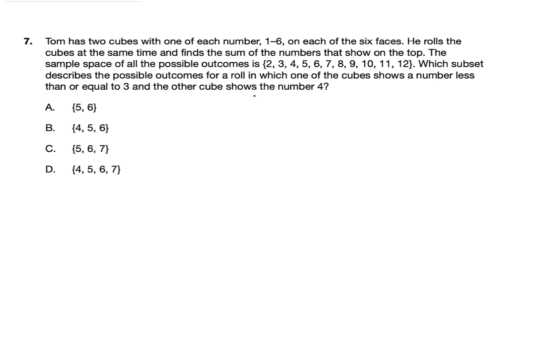Now they want us to describe the subset. If one of the cubes shows a number less than or equal to 3, then it has a 1, a 2, or a 3. The other cube only has a 4. Remember it says he has to find the sum. So 4 plus 1 is 5, 4 plus 2 is 6, 4 plus 3 is 7. We're looking for 5, 6, and 7 as our possible subset. So our answer is C.